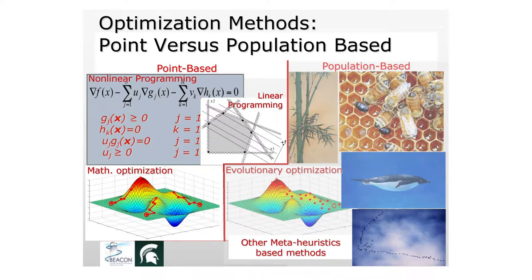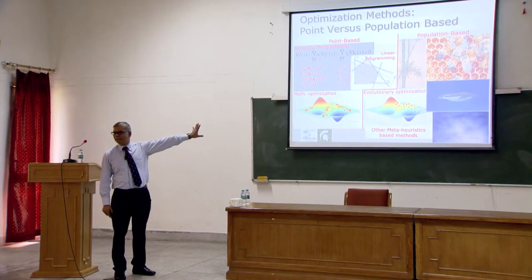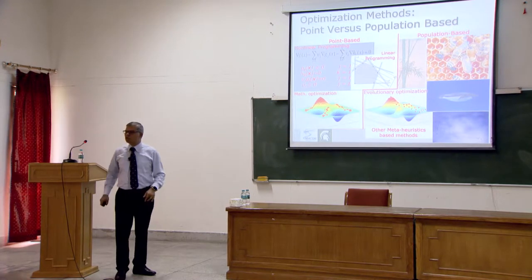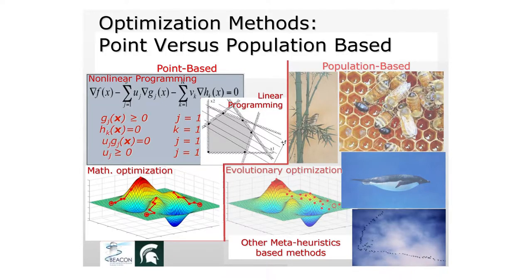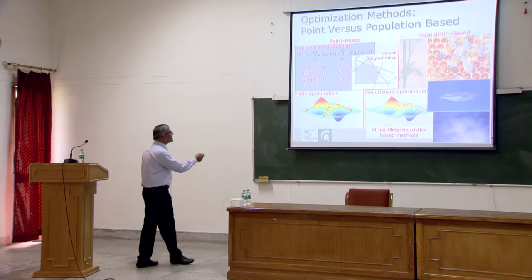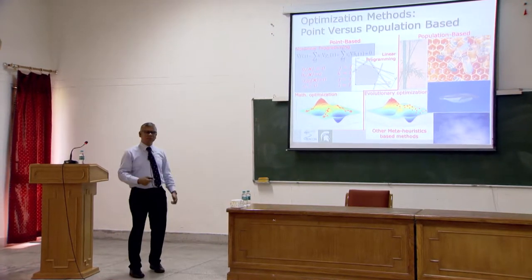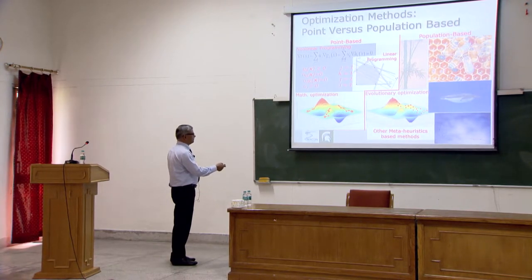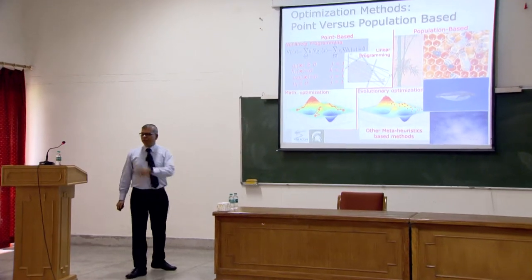There are many kinds of methods, but you can divide them into two classes based on the number of points used in each iteration. On one side are point-based methods: imagine an objective function with a global maximum, local maxima, a global minimum, and a local minimum. In point-based methods, you start with a single guess point — usually your current design — and iteratively improve. These are typically math-based; they tell you 'move to this point,' then 'move to that point,' using local neighborhood information.